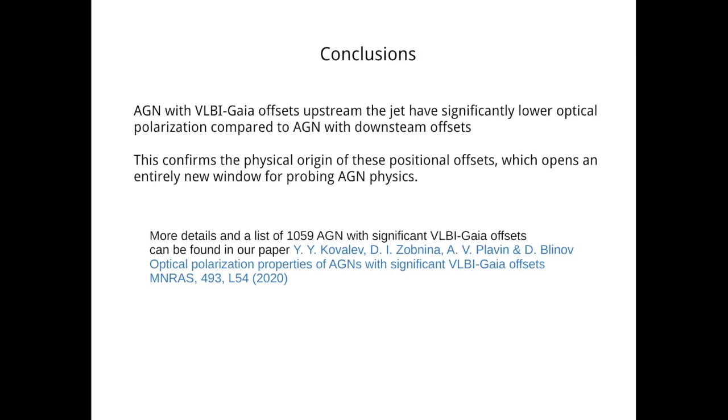I reached my final slide and here are my conclusions. We have demonstrated that active galactic nuclei with VLBI to Gaia offsets pointed upstream the jet have significantly lower optical polarization compared to AGN with downstream offsets. This finding confirms that the VLBI to Gaia offsets have a physical origin, which in turn opens an entirely new window for probing AGN physics. This work has been recently published in MNRAS letters. You can see the link to the paper in this slide. And to this paper we attached a list of over 1000 active galactic nuclei with significant VLBI-Gaia offsets containing their coordinates and parameters. Thank you for your attention.